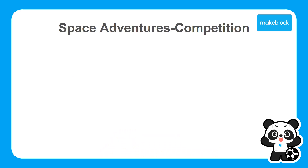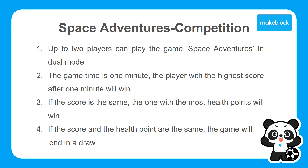I hope you guys have been paying attention to the last video, because right now you are going to be programming the game. So the game has four simple rules. Rule number one: up to two players can play the game in dual mode. Rule number two: the game is one minute long — the player with the highest score after one minute wins. Rule number three: if the scores are the same, the person with the most health points will win. Rule number four: if the score and the health points are the same, then the game will end in a draw.